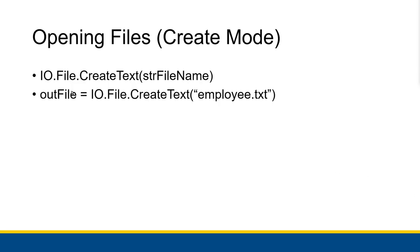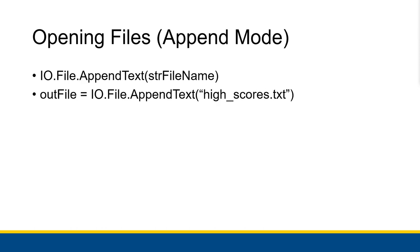IO stands for input/output — it's the library that handles input and output for your program. Opening a file in append mode is very similar, but instead of using the CreateText method of io.File, you use the AppendText method. So: outfile = io.File.AppendText("filename.txt") — this appends text to the end of the existing file rather than completely replacing it.